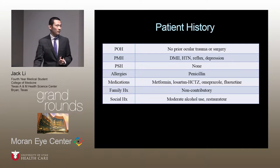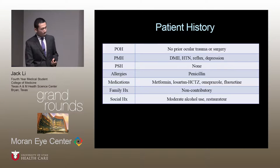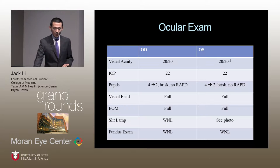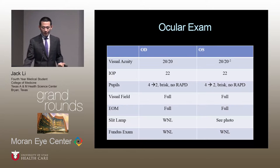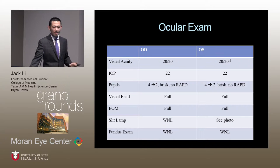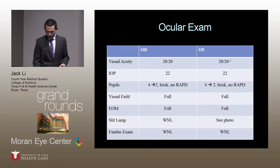On social history, he is a moderate alcohol user and a restaurateur. On examination, his vision, pressures, pupils, visual fields, extraocular movements and alignment, and fundus exam are all normal. Slit lamp examination of the left eye is presented in the next slide.